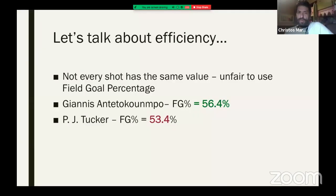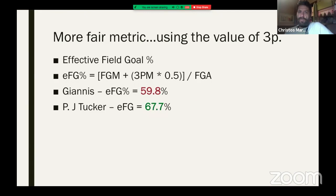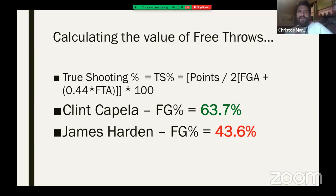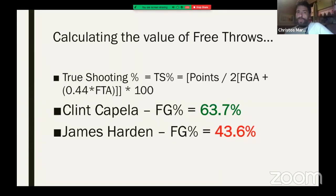There is a huge difference between 53.4 and 67.7, close to 68%. Basketball is not only twos and threes — it's also free throws. True shooting percentage is a metric that calculates how many points you score from twos and threes and how many you get from free throws.